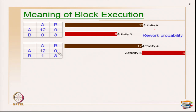Now I have activity A and activity B. Duration for A is 12, duration for B is 8, and I have given a rework probability of 1 here and 0 here. Since there is an X mark, activity A executes first, then activity B because there is a dependency relationship. After B, A never repeats because I gave 0. So the duration stops, and this shows A and B are dependent activities - this represents sequential execution.